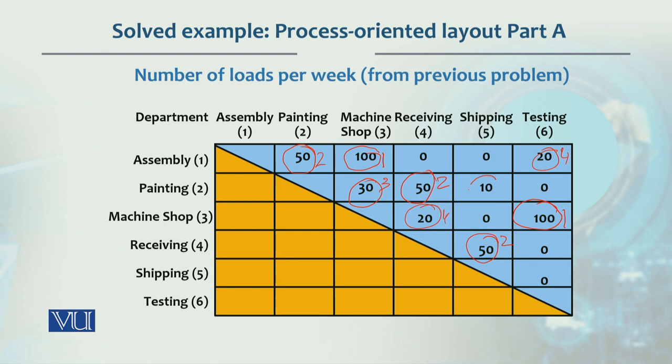Priority 5 is 10 units of movement. The remaining pairs have 0 movement between the departments, so those are not important to locate close together. We have to ensure that the first priority is not missed, then the second, and so on — on this basis we can decide the final layout.